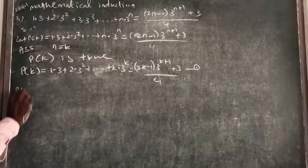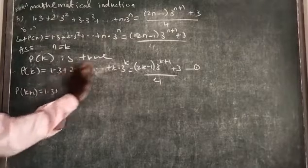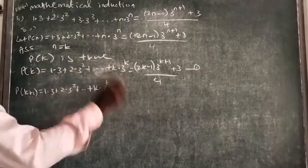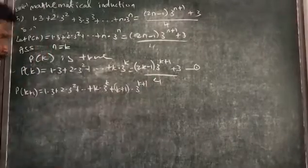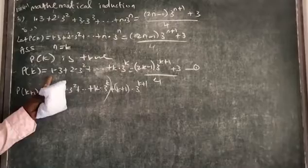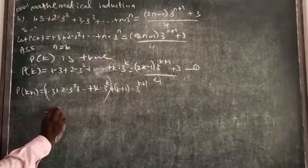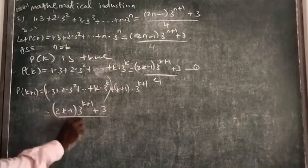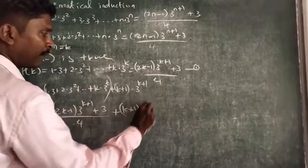So P of k plus 1 equals 1 dot 3 plus 2 dot 3 squared plus ... up to the k term, and then we add the next term k plus 1 into 3 to the power k plus 1. From the 1-to-k portion, we replace using equation 1, giving us 2k minus 1 times 3 to the power k plus 1, plus 3 by 4, plus k plus 1 into 3 to the power k plus 1.